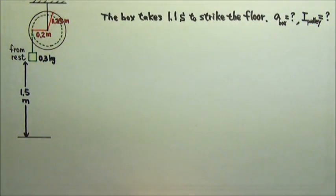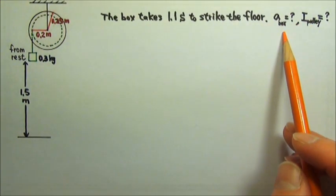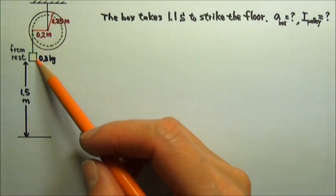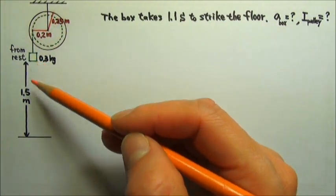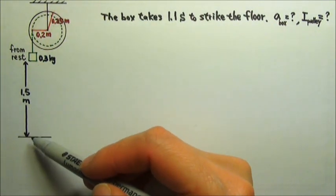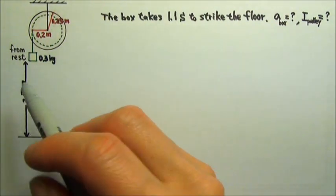First, we can use kinematics to find the acceleration of the box. We do not have to look at the rotation, because we have enough information about the translational motion of the box. The box does constant acceleration motion, and we know three things.